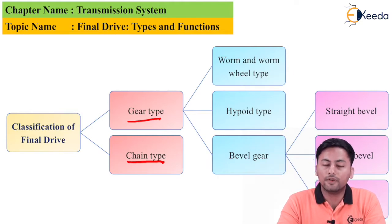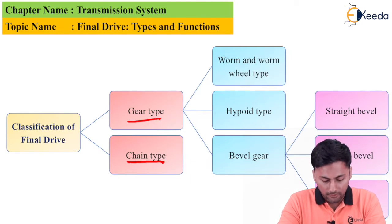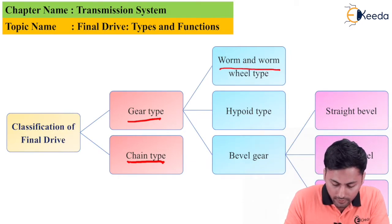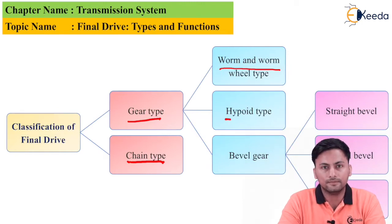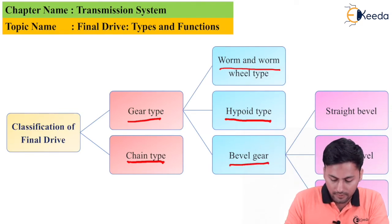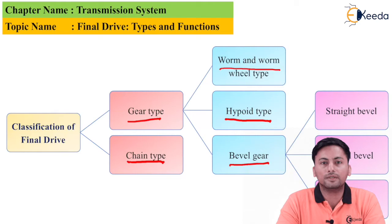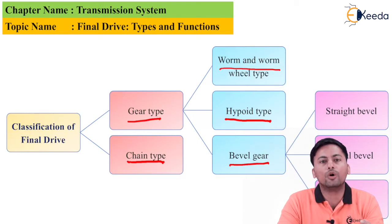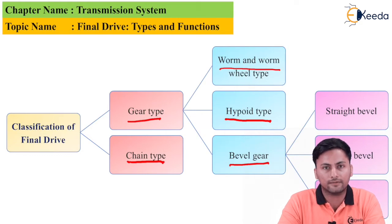If we further classify the gear type, we can classify it into three types: the first one is the worm and worm wheel type, then we have the hypoid type, and the last one is the bevel gear. All three are part of the gear drive.